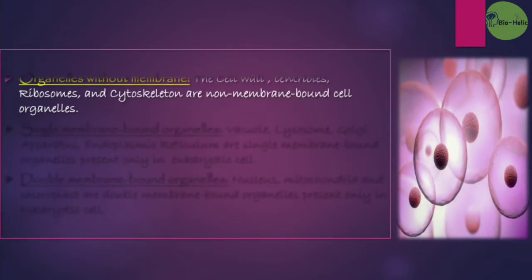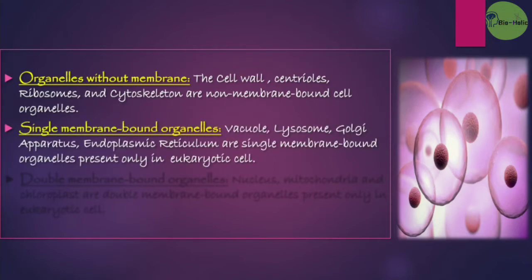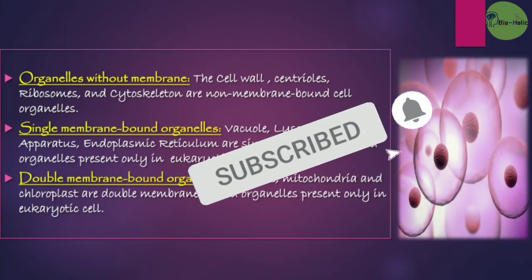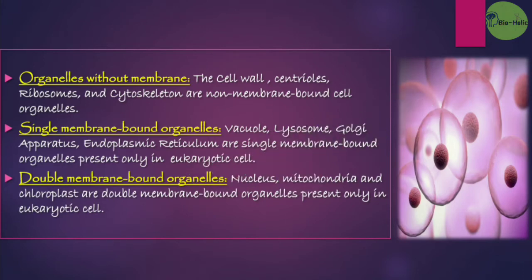Depending upon the presence of the outer membrane, organelles can be classified into three types. First, organelles without membrane — cell walls, centrioles, ribosomes, and the cytoskeleton are non-membrane-bound organelles. Second, single membrane-bound organelles — for example, vacuole, lysosome, Golgi apparatus, and endoplasmic reticulum — present only in eukaryotic cells. Third, double membrane-bound organelles — like the nucleus, mitochondria, and chloroplast — also present only in eukaryotic cells.